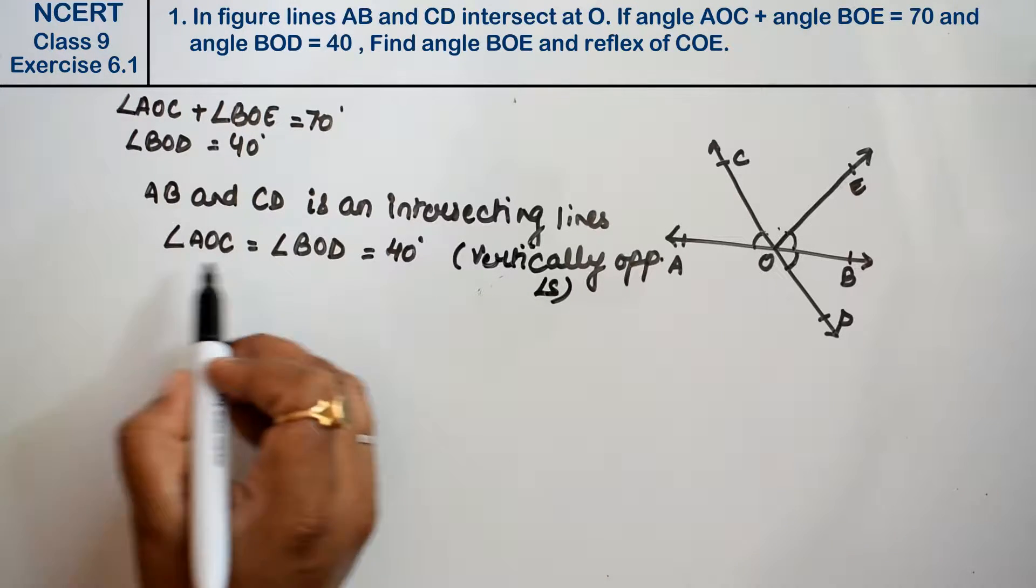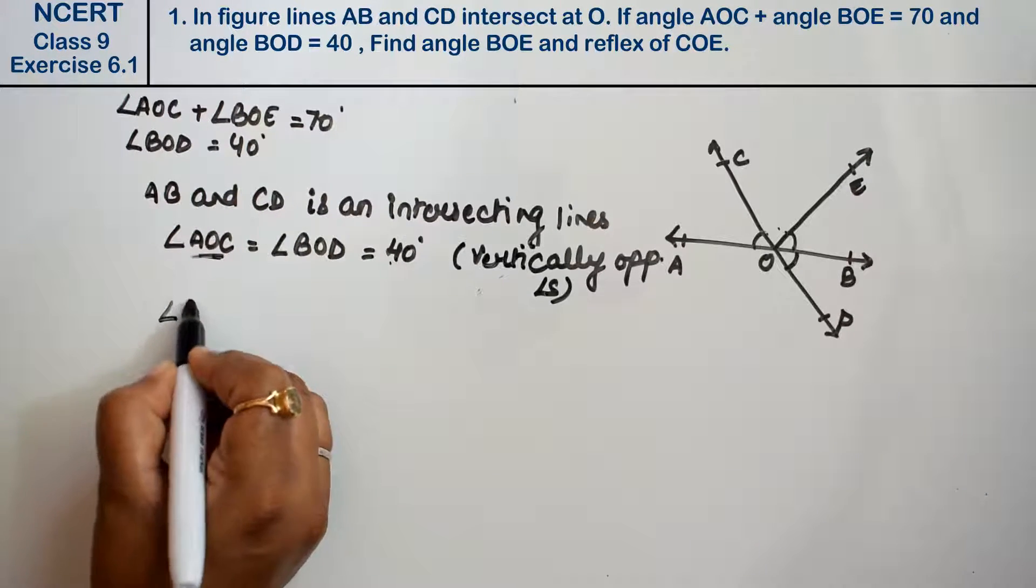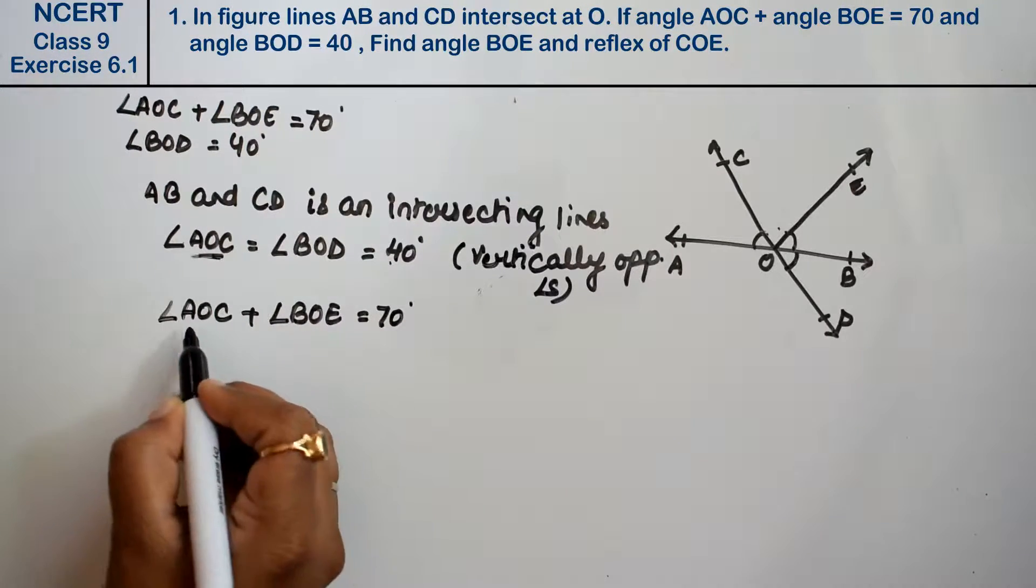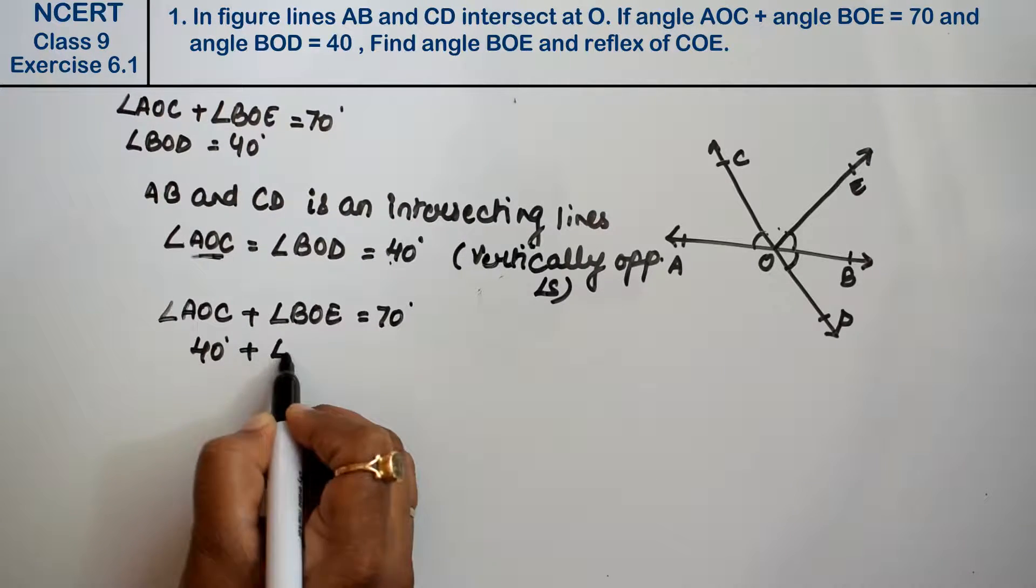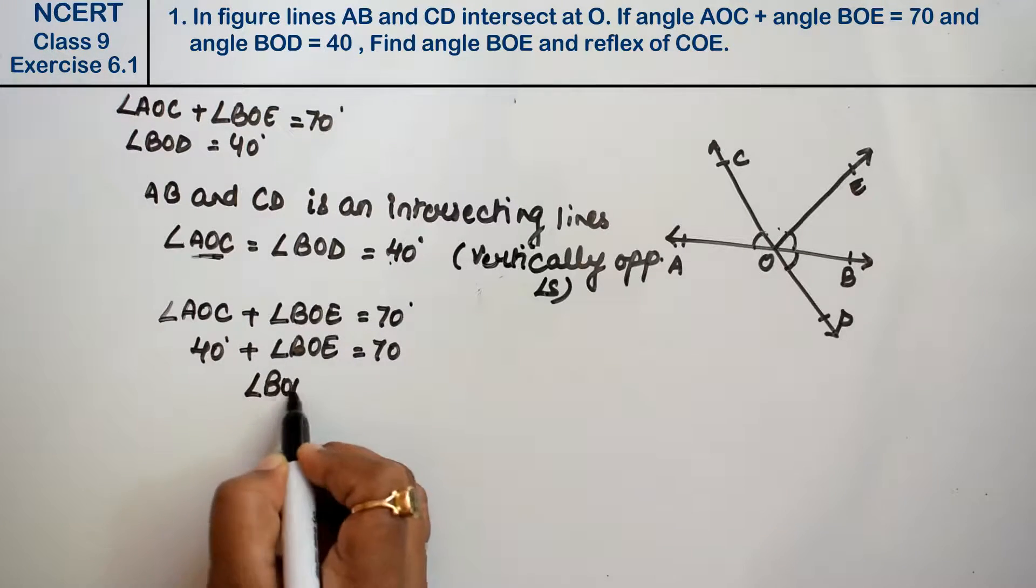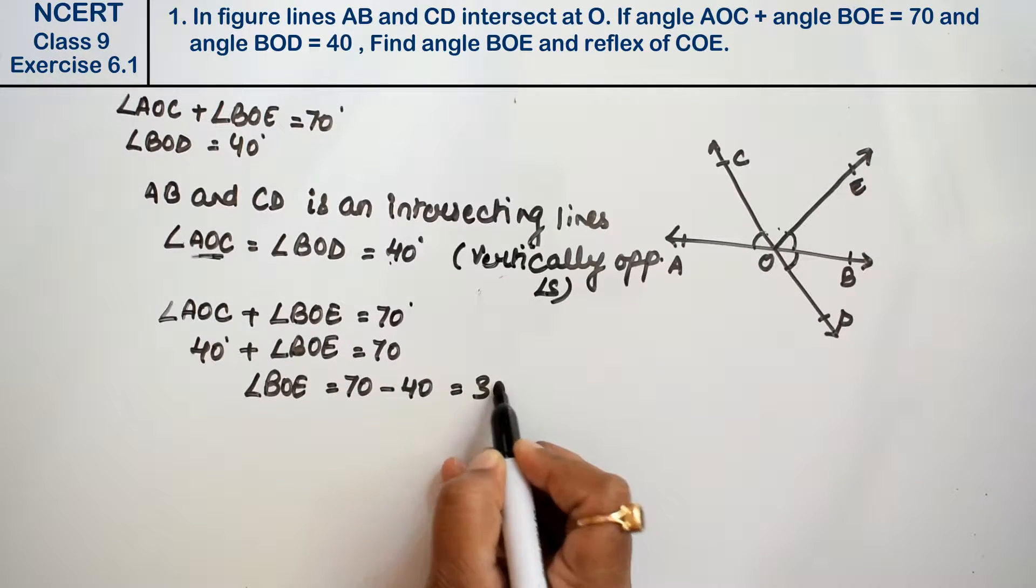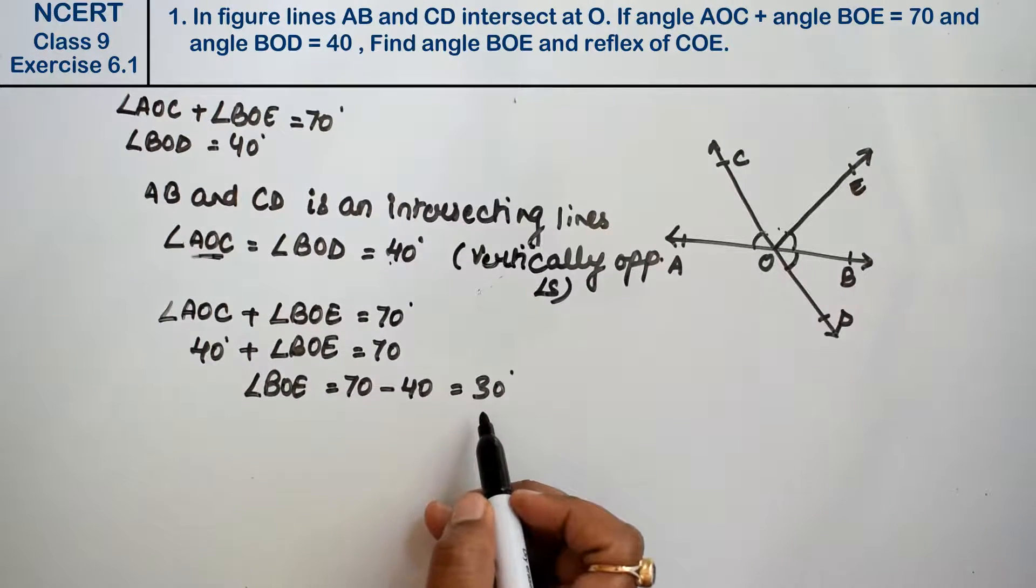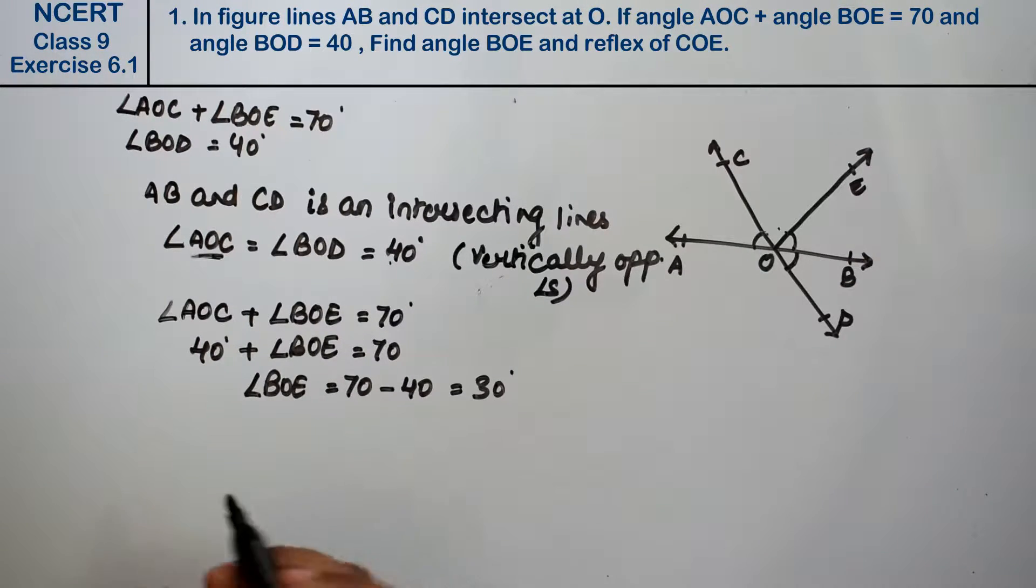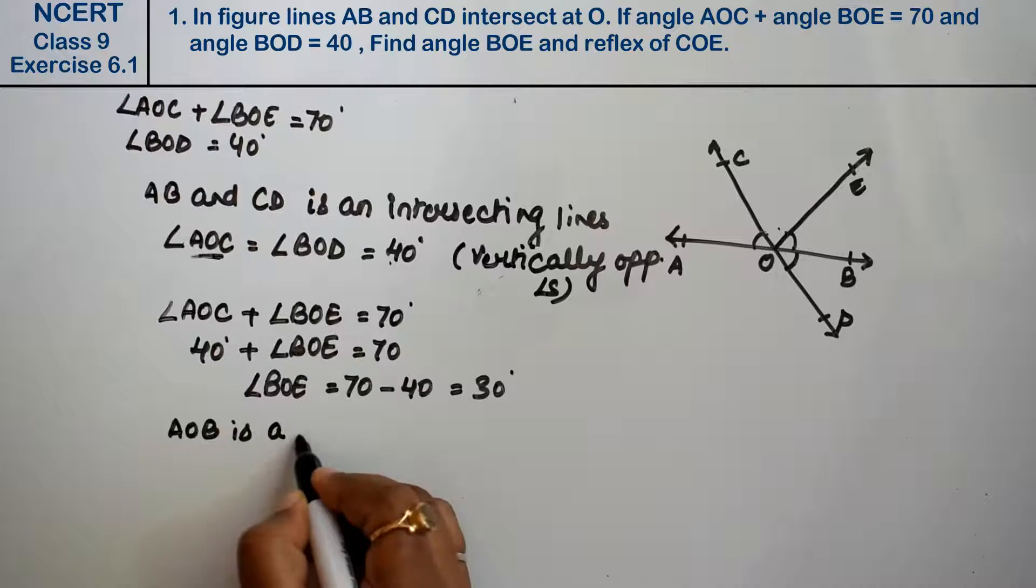Now we know that angle AOC plus angle BOE equals 70 degrees. Since AOC is 40 degrees, angle BOE equals 30 degrees.